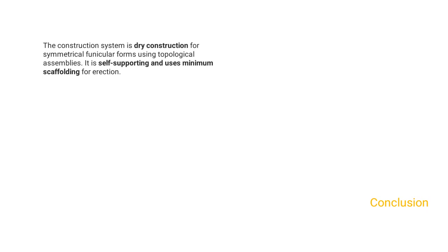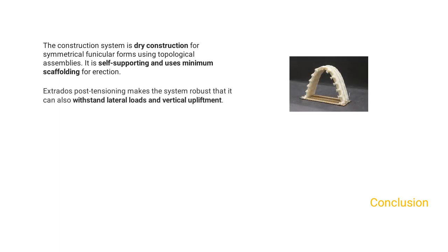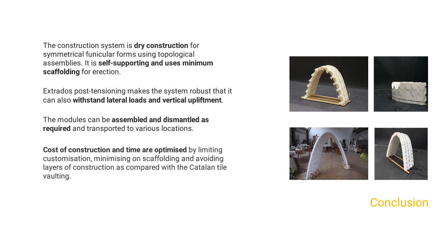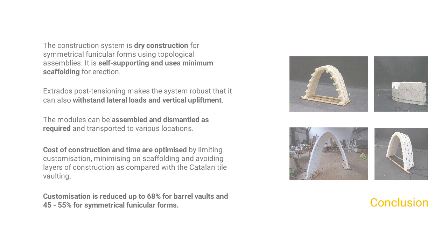Conclusion. The construction system is dry construction for symmetrical funicular forms using topological assemblies. It is self-supporting and uses minimum scaffolding for erection. Extrados post-tensioning makes the system robust that it can also withstand lateral loads and vertical upliftment. The modules can be assembled and dismantled as required and transported to various locations. Cost of construction and time are optimized by limiting customization, minimizing scaffolding, and avoiding layers of construction as compared with the Catalan tile vaulting. Customization is reduced up to 68% for barrel vaults and 45% to 55% for symmetrical funicular forms.